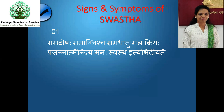The Sushruta definition is: Sama dosha, sama agni, sama dhatu, sama mala, sama kriya - and then prasanna atma, indriya, manaha - swastha ityabhidhyate. This is like a cycle with a karyakarana siddhanta. The karya is sama dosha, sama agni, sama dhatu, sama mala, sama kriya - this karya gives rise to the second line of prasanna atma, indriya, manaha. Only then can a person be called Swastha.